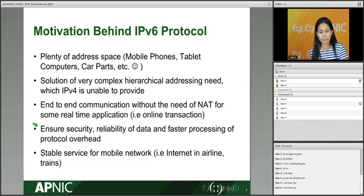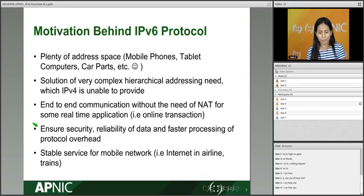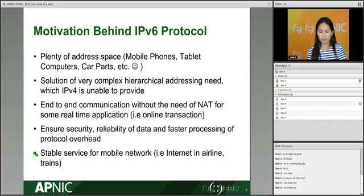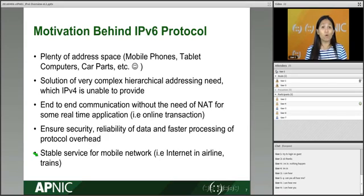IPv6 also ensures security reliability of data, faster processing of protocol overhead because it uses 64-bit alignment, and has IPsec built-in by default. Stable services for mobile networks are also supported — we are seeing this now with internet on different airlines, transport systems, and mobile devices using IPv6 addresses, with support for Mobile IPv6.